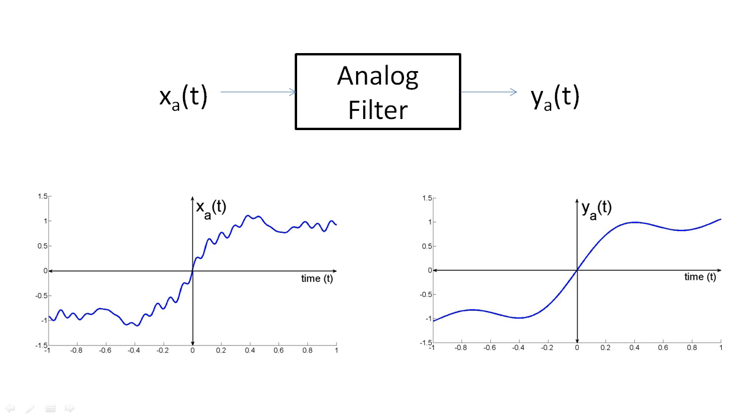In Analog Signal Processing, you learn that a system consists of an input, filter, and output. We use the subscript A to denote that the signals X and Y are Analog Signals. In this example, we show how a low-pass filter removes the high-frequency components, or the squiggles, from X sub A of T to produce a low-frequency signal, Y sub A of T.